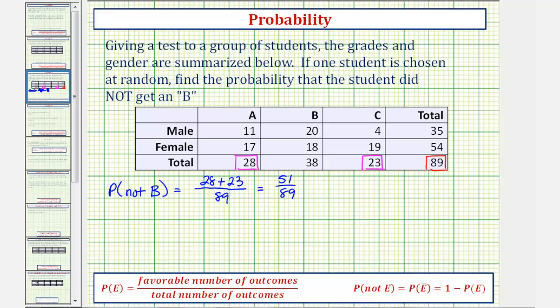Now let's use the complement formula given here. The probability of not B, which we could also write as B with a bar over it, is also equal to one minus the probability of a B, which would be one minus the probability of a student receiving a B would be equal to the number of students that received a B, divided by the total number of students that took the test.